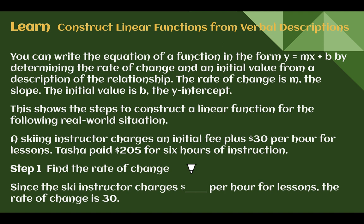Let's learn to construct linear functions from verbal descriptions. As we've been doing, you can write the equation in y equals mx plus b by figuring out the rate of change and the initial value, this time from a description. When reading a verbal description, the rate of change is usually accompanied by the word per or each. The initial value — your y-intercept — is where the context starts, or what is happening when you have zero of your x quantity.